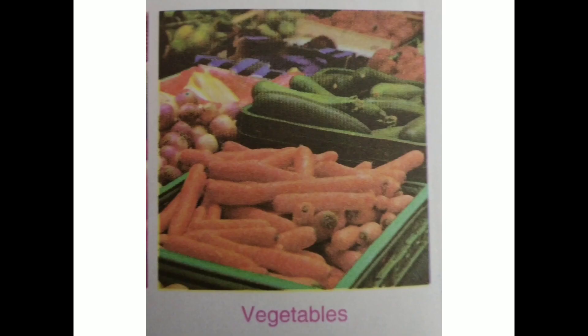Now, these are the vegetables. We also get vegetables from the plant. Some are fruits, some are roots, some are stems. So we get vegetables from different parts of the plant — by their fruits, roots, stems, and leaves also.